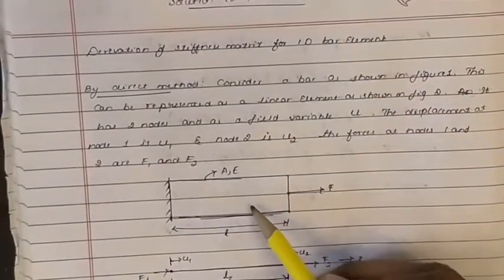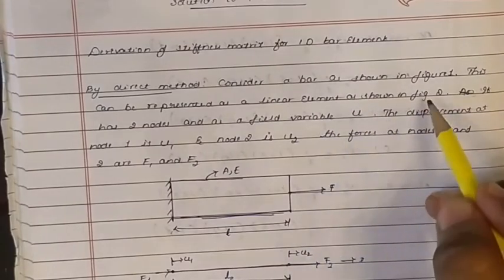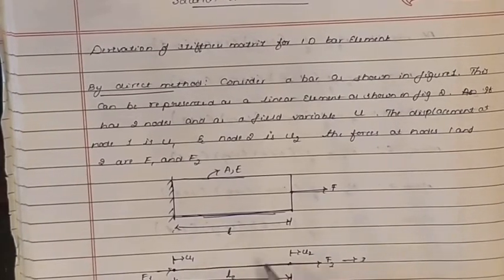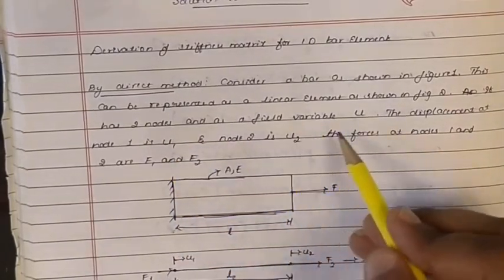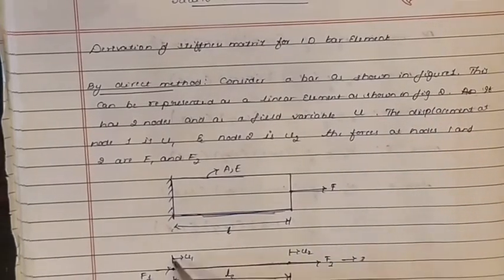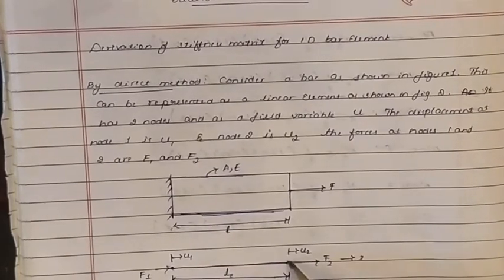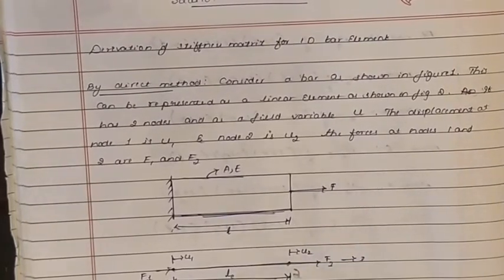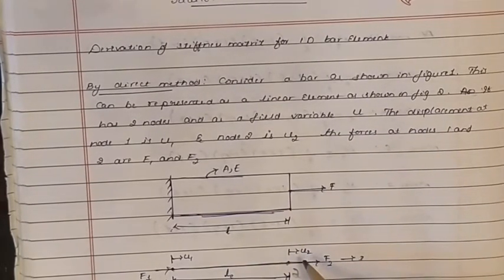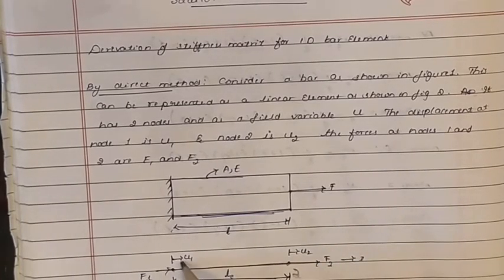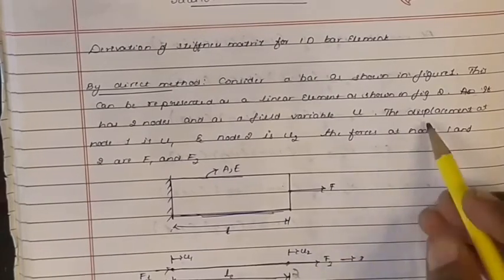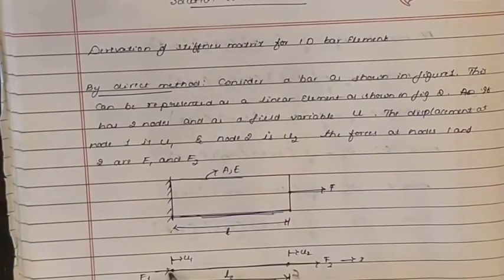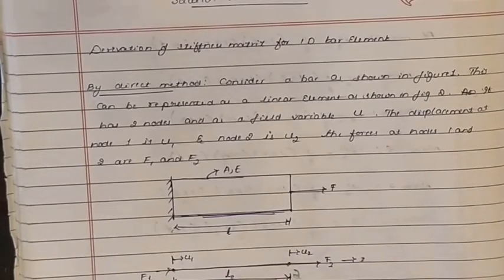By the direct method, consider a bar as shown in the figure. This can be represented as a linear element in the finite element model — just a line diagram with two nodes and field variable u. At the fixed condition there is one node, and at the point where the force is acting there is another node. This is node 1 and node 2. The field variable is displacement: u1 is the displacement at node 1, u2 is the displacement at node 2. The forces at nodes 1 and 2 are f1 and f2 respectively.